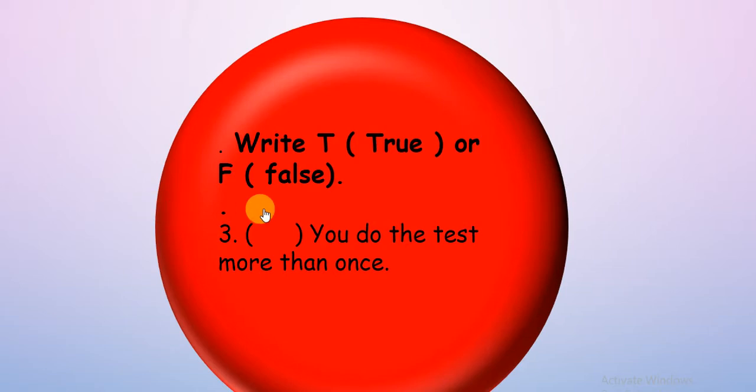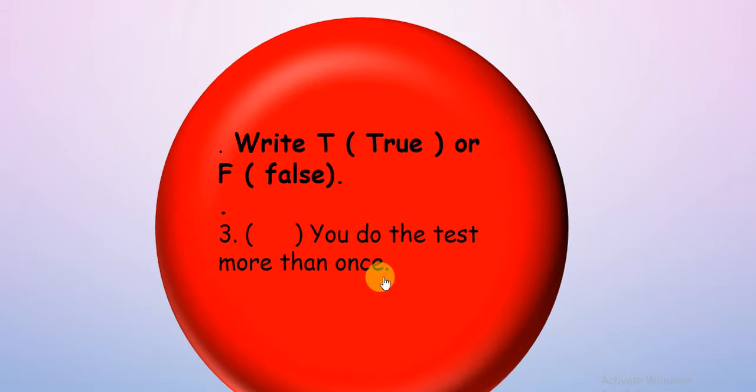Let's try the next one — write T if it's true or F if it's false: you do the test more than once. Think with me — during the test, we do one test with water and another without water, so we do it more than once. We can repeat it again and again to make sure of the answers or results. So it's true!